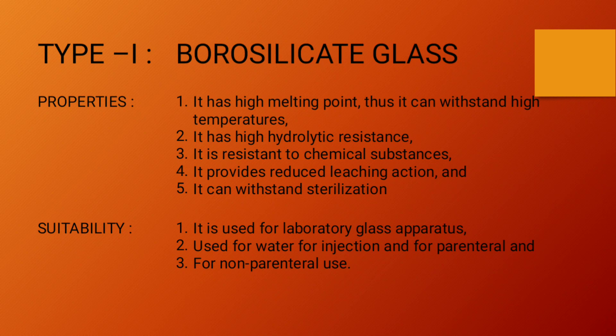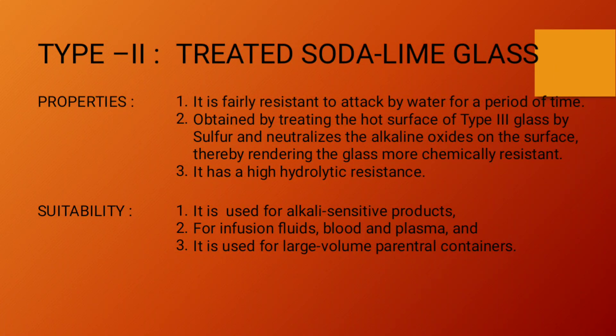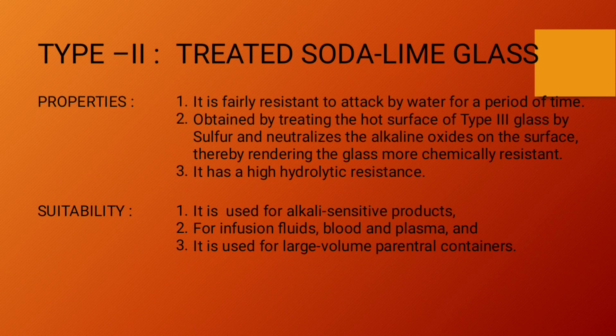Moving further to the second type of glasses. Type 2 is treated soda lime glass. It is fairly resistant to attack by water for a period of time. Treated soda lime glass is obtained by treating the hot surface of type 3 glass with sulfur, which neutralizes the alkali oxides on the surface, making the glass more chemically resistant. It also has high hydrolytic resistance, and is suitable for alkali sensitive products as the alkali has been neutralized.